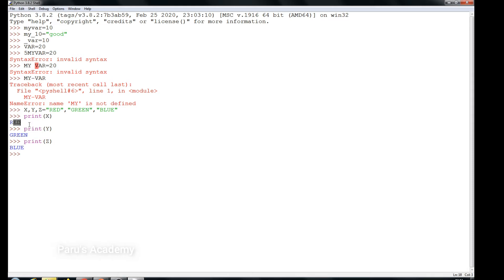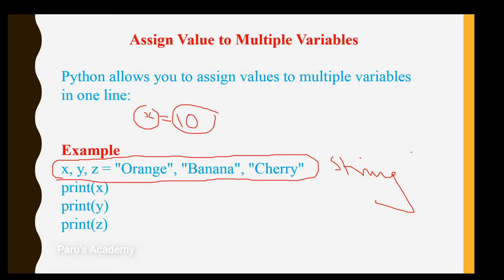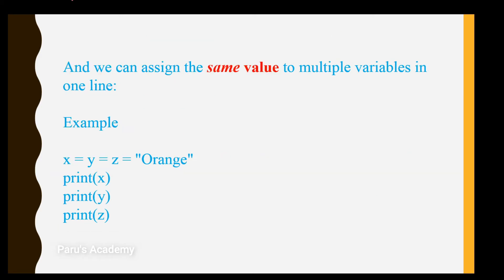So that's about assigning different values to multiple variables. Next, we can also assign the same value to multiple variables in a single line. See this example: x equal to y equal to z equal to 'orange'. If we print x, it will print orange; y also orange; z also orange.